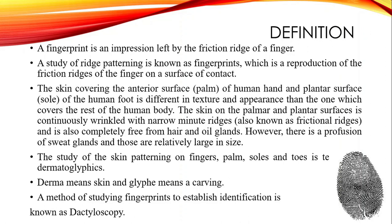Now let's discuss some relevant terms related to fingerprints. The first one is dermatoglyphics — the study of skin patterning on fingers, palms, soles, and toes. The word comes from 'derma' meaning skin and 'glyph' meaning a carving, referring to the patterns present on fingers, palms, and soles.